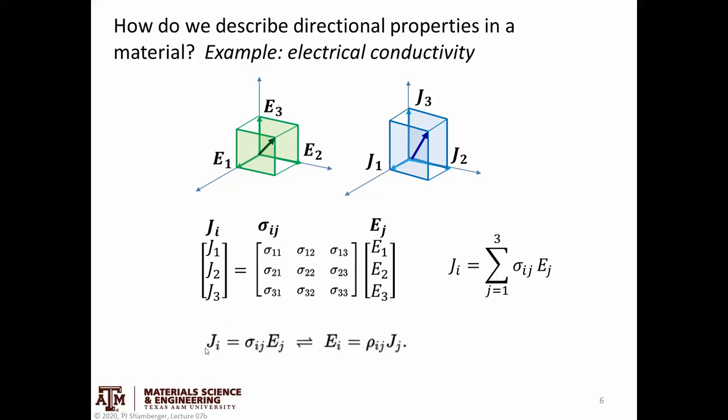So if I think about this, again, in terms of a current density being related to conductivity times some electric field, then I know that electric field could be represented as a vector. So it could have three different components that are telling me about the orientation that that electric field is applied.